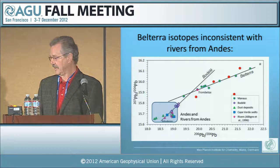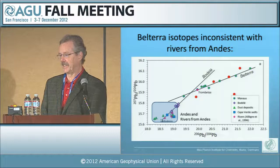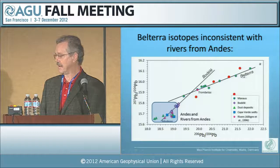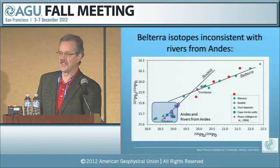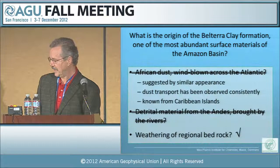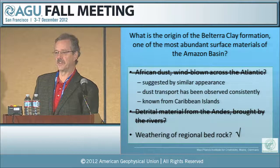We've eliminated African dust, so what remains are detrital materials from the Andes and weathering of regional bedrock. Looking at the lead-lead system, the Andes rivers all plot essentially in the same region as the African materials, whereas the Belterra does not. Only the Trombetas River — a river of the northeastern Amazon basin — plots in the Belterra region, which shows that the hypothesis that the Belterra comes from the Andes is also clearly falsified. What remains, quite plausibly consistent with geological outcrop behavior, is weathering of regional bedrock.